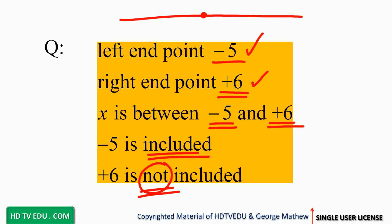Here is our origin. Negative 1, negative 2, negative 3, negative 4, negative 5 — and negative 5 is included, so we put a square bracket. Positive 1, 2, 3, 4, 5, 6 — positive 6 is not part of the solution, so we put a parenthesis there.